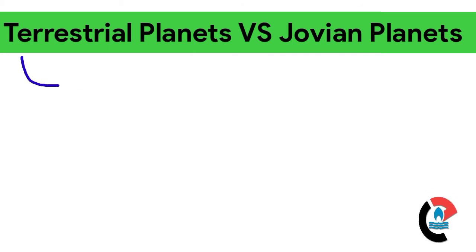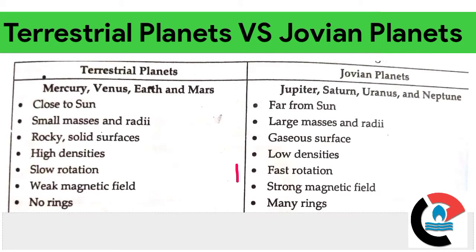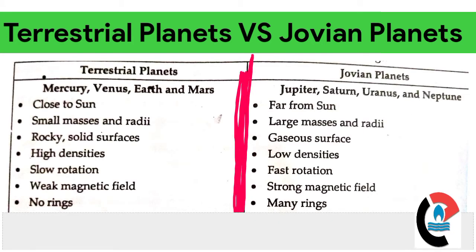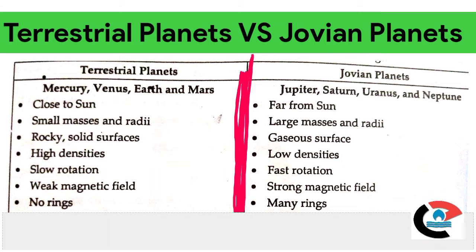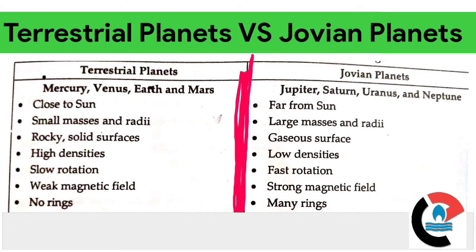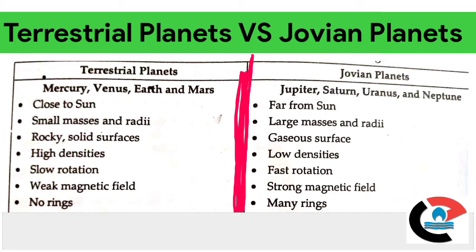Now what is the main difference between terrestrial planets and jovian planets? Terrestrial planets are Mercury, Venus, Earth and Mars. Jovian planets are Jupiter, Saturn, Uranus and Neptune. Terrestrial planets are close to the sun, and jovian planets are far from the sun. Terrestrial planets have small masses and radii, and jovian planets have large masses and radii.